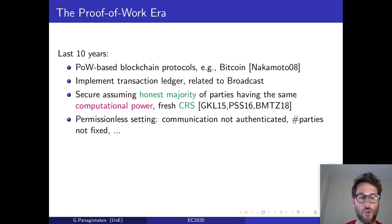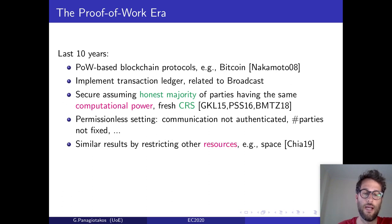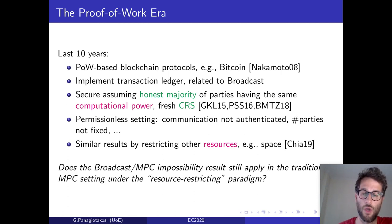Now, this result seems to be contradicting the impossibility result we mentioned before, since a fresh CRS is a form of a public setup. To add confusion, all these results were shown in what is called the permissionless setting, where communication is not authenticated and the number of parties is not fixed. So, the question we pose here is the following: Does this MPC impossibility result we mentioned before still apply in the traditional MPC setting under this resource-restricted paradigm?